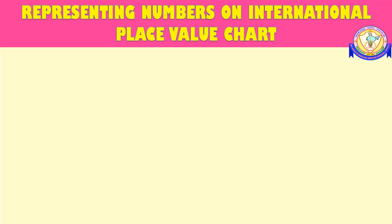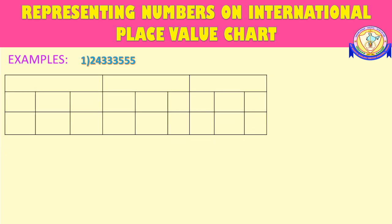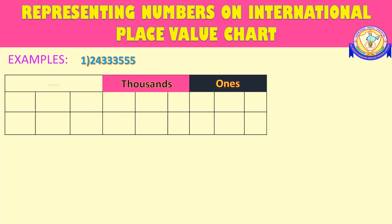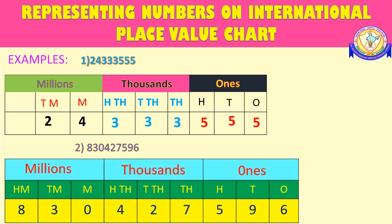Let us learn how to represent numbers on an International Place Value Chart. The given number is an eight-digit number. Draw a table and write the names of the periods — ones, thousands, millions — along with the place names. Then, from the extreme right, place the first three digits under the ones period, the next three digits under the thousands period, and the rest of the digits under the millions period. There are nine digits in the second example. Write the place names starting from ones to hundred millions, then place the digits accordingly.